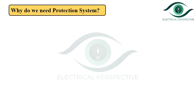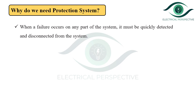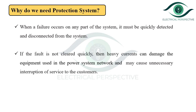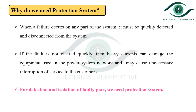The basic question is: why do we need the protection system? We know that no power system can be designed in such a way that it would never fail. Even in our day-to-day life, we face failures and troubles at some point over the lifespan. In the language of protection, these failures are called faults. When a failure occurs on any part of the system, it must be quickly detected and disconnected from the system. If the fault is not cleared quickly, heavy currents can damage the equipment used in the power system network and may cause unnecessary interruption of service to the customers. So, for the detection of the fault and isolation of the faulty part, we need the protection system.